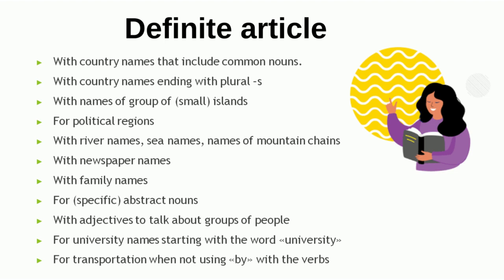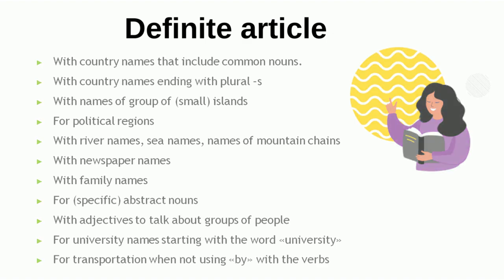We also use 'The' with the Royal Family. In addition, 'The' is used with specific abstract nouns and also with adjectives, like 'The Brightest Building'. It is used with university names that include the word 'University', like 'The University of Agriculture' or 'The University of Faisalabad'. For transportation, when we do not use the preposition 'by', we use 'The' — we will see this in more detail next.